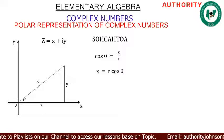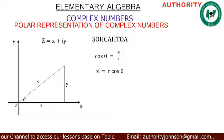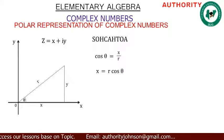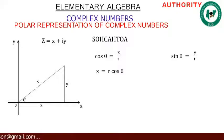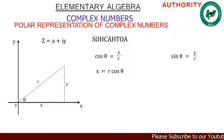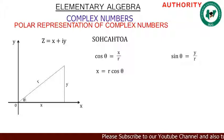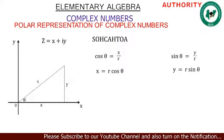So x equals r·cos θ. Now let's also find sin θ: sin θ equals opposite over hypotenuse, and our opposite is y and hypotenuse is r, so sin θ equals y over r. Cross-multiplying to make y the subject gives us y equals r·sin θ.